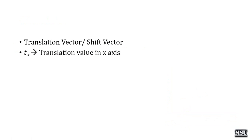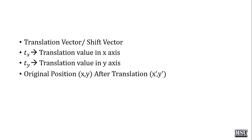For a 2D object, the translation vector has tx, which is the translation value in the x-axis, and ty, which is the translation value in the y-axis. The original position is (x, y) and after translation it becomes (x dash, y dash). The new location is given by: x dash = x + tx, and y dash = y + ty.